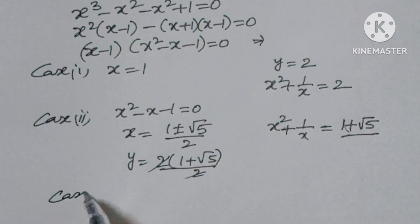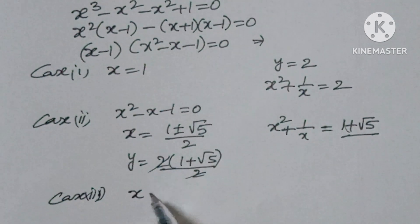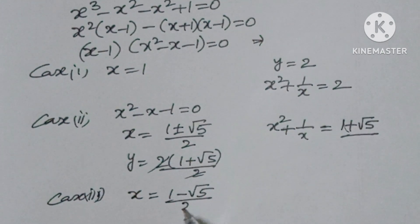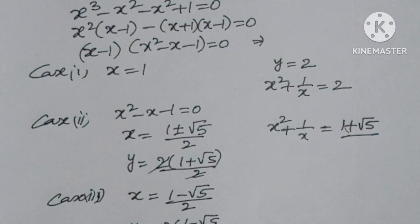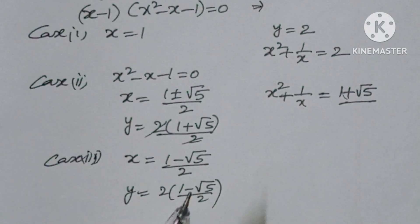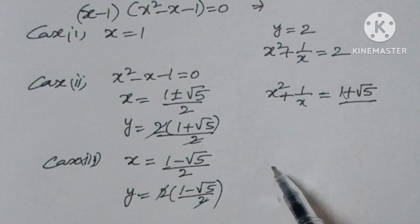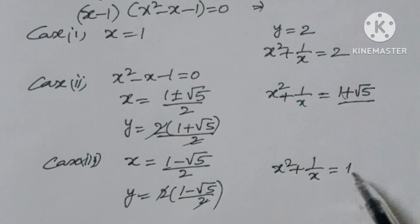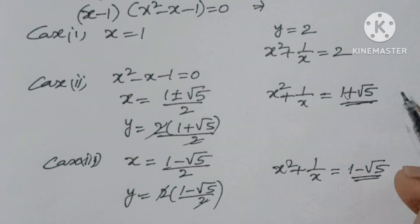Case 3: x equals (1 minus root 5) by 2. Then y equals 2 times (1 minus root 5) by 2. The 2 cancels, so x squared plus 1 by x equals 1 minus root 5. I hope you understood the video. Thank you for watching.